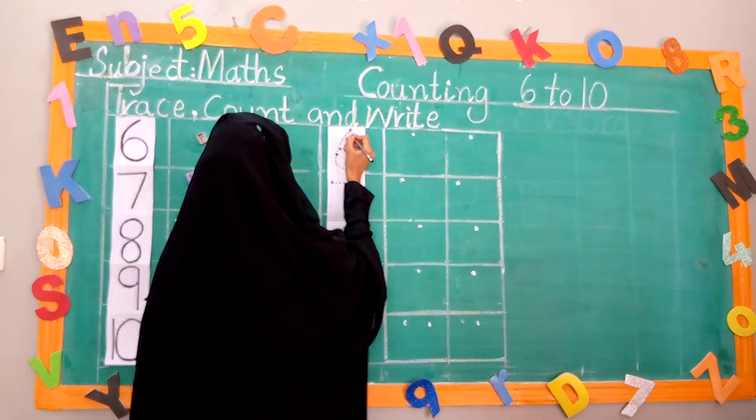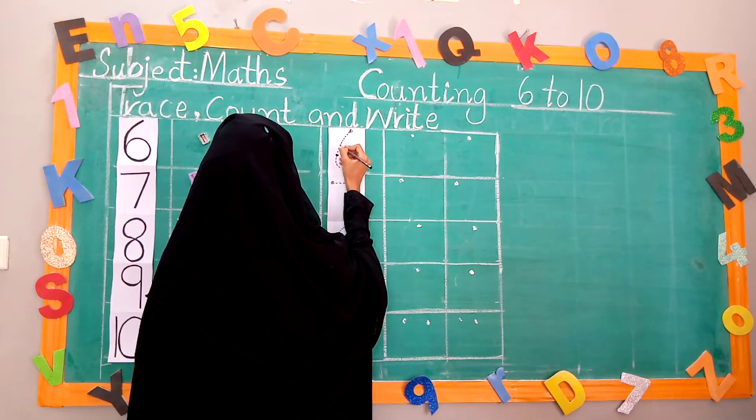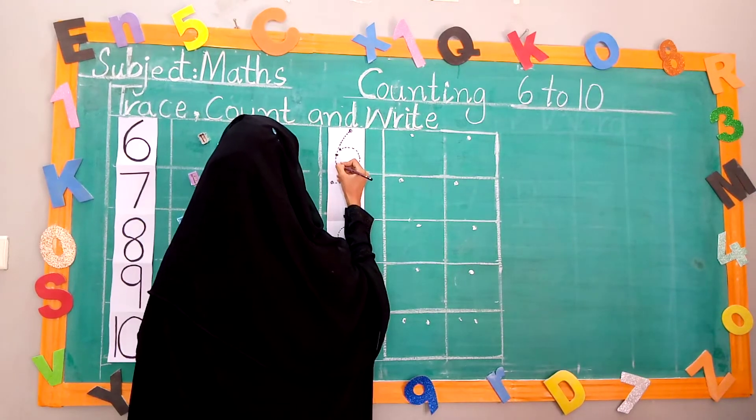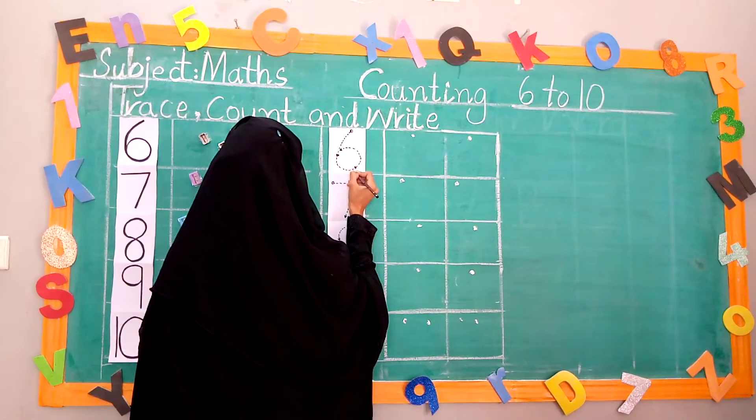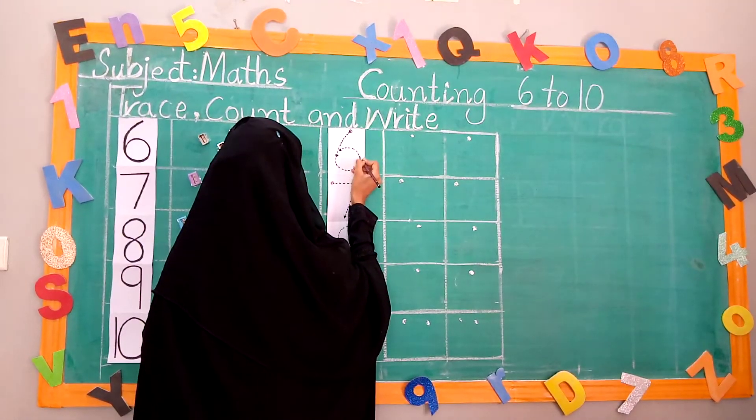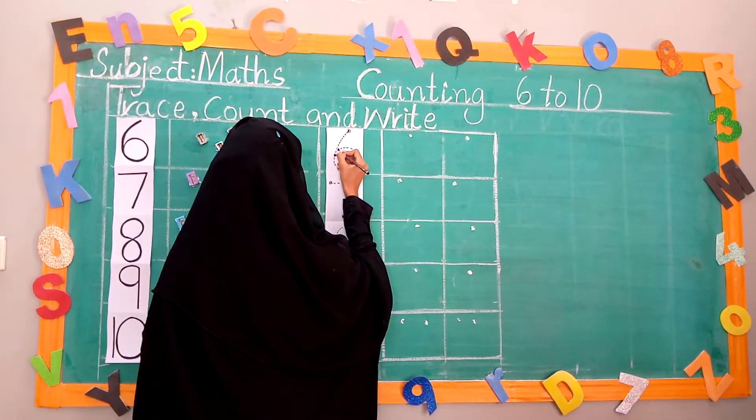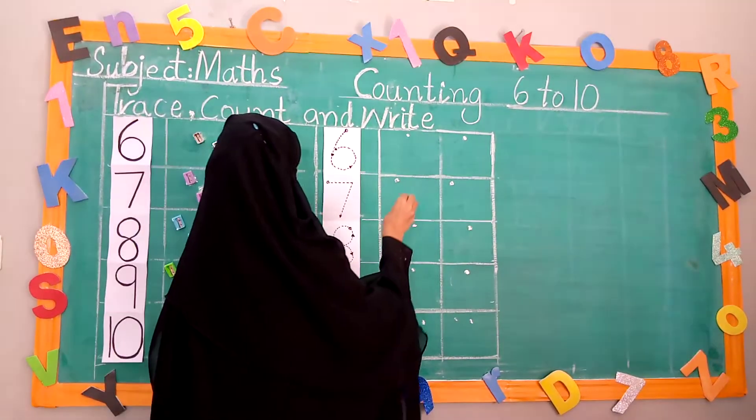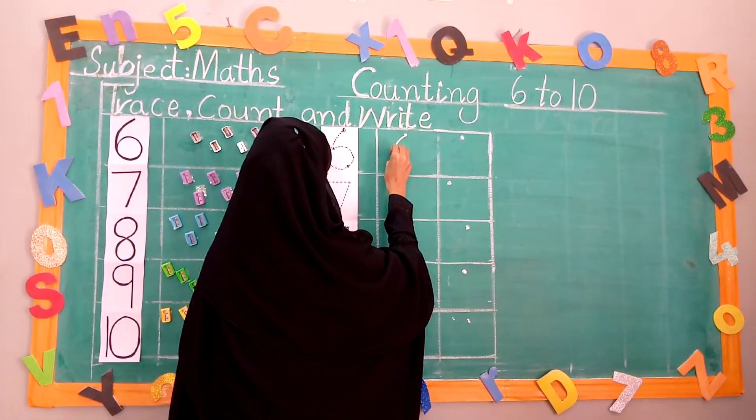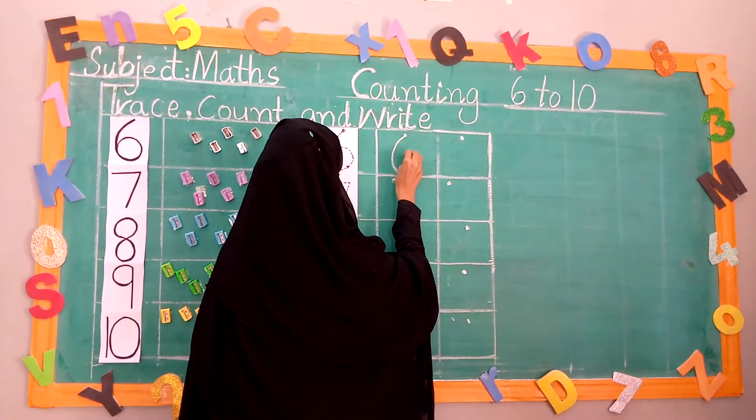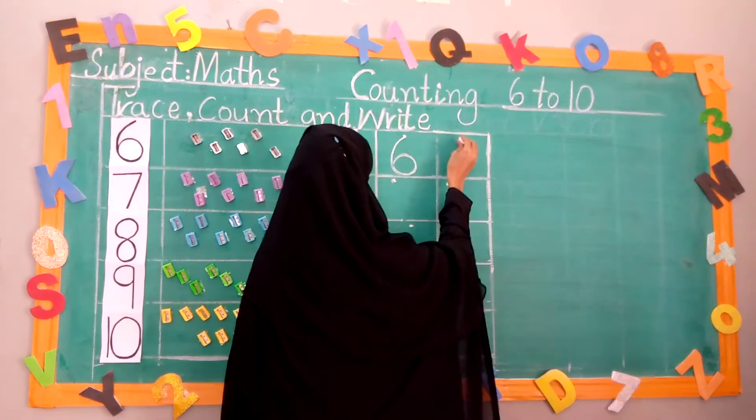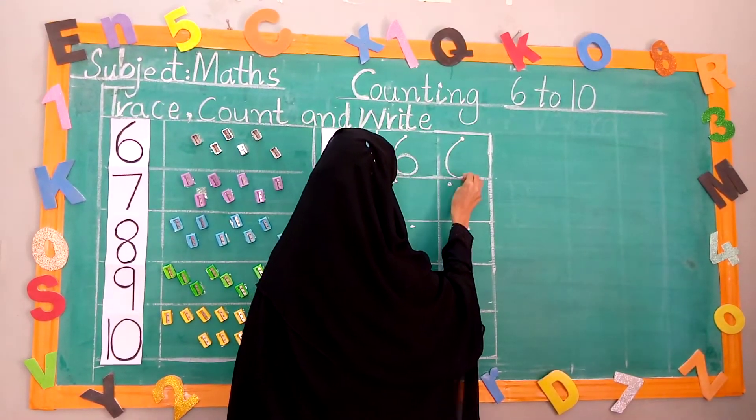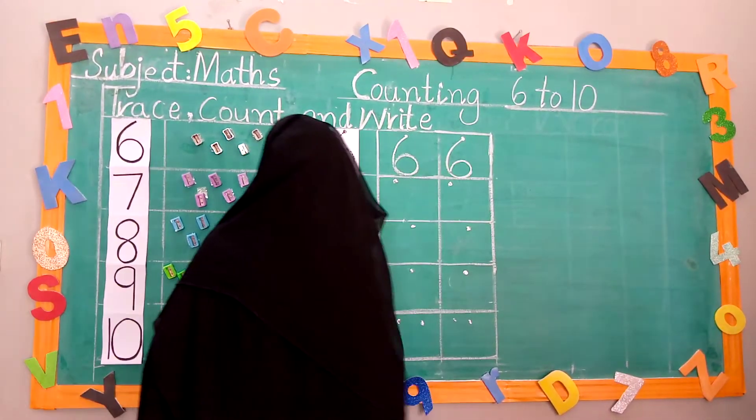Now, trace 6. 6 is down and must turn around. Now, we write 6. Touch the down line. Again, we write 6. Touch the down line.